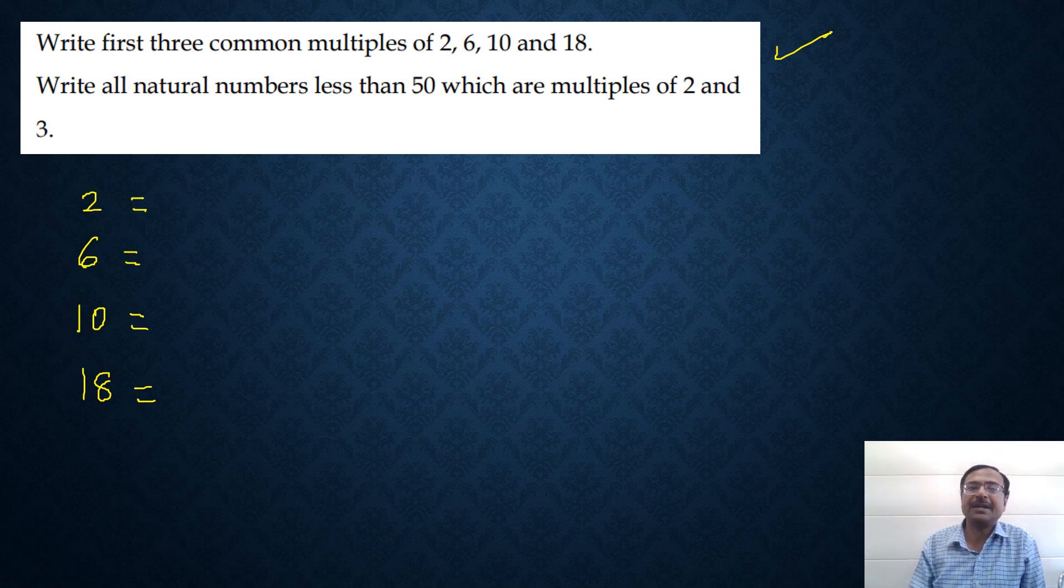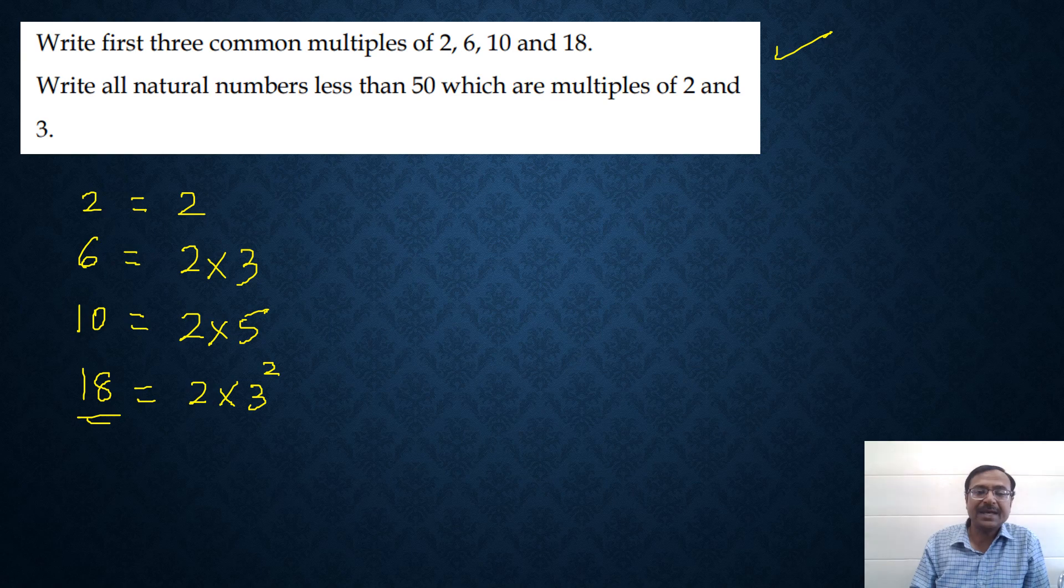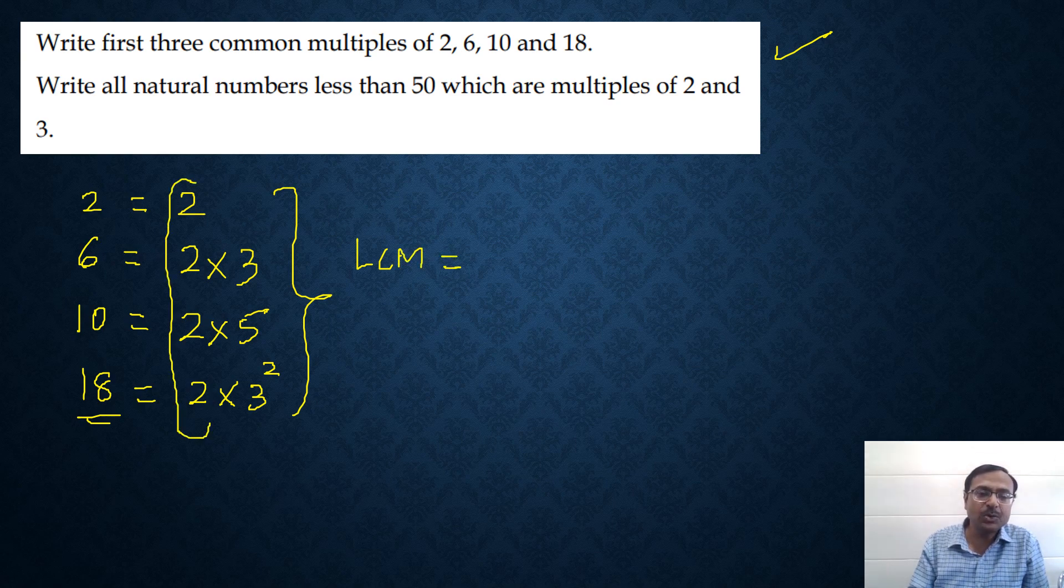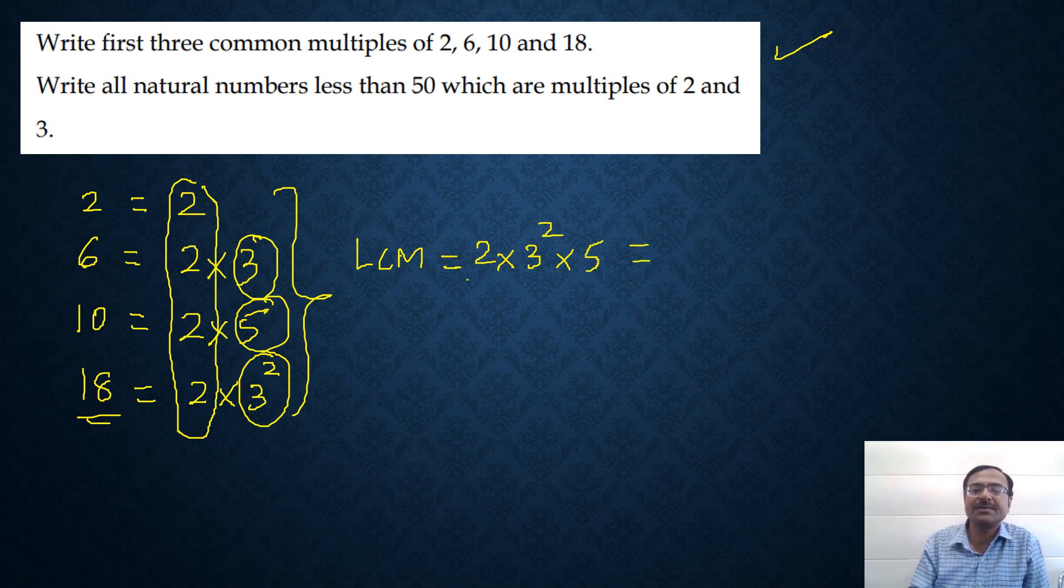Least common multiple of these numbers. Now 2 is 2 itself, 6 is 2 into 3, 10 is 2 into 5 and 18 is 2 into 3 square. That is how you first represent the numbers in terms of its prime factors. And therefore, the least common multiple will be, you can see that 2 is a common factor so I will write 2 once, and then 3 and 3 square, the higher power is 3 square, and then we have another 5. So what is the LCM? LCM is 5 times 10 and 9, so 90. The LCM of 2, 6, 10, 18 is 90.